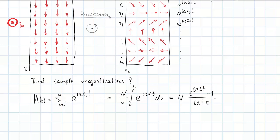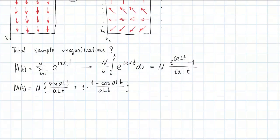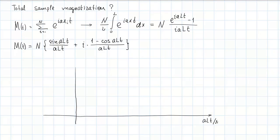This expression has a real and imaginary parts. The real part is a sinc function of the product A, L and T. And the imaginary part is equal to one minus cosine of A, L, T divided by A, L, T. Now I can plot the real and the imaginary parts of the function M of T, which correspond to the X and Y components of the spin magnetization respectively.